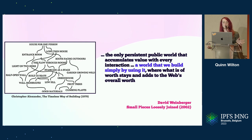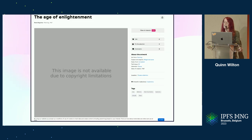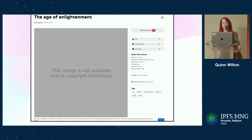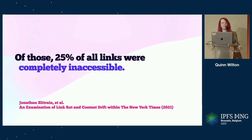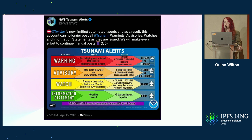In 2002, David Weinberger wrote that the internet forms the only persistent world that accumulates value with every interaction — a world that we build simply by using it, where what is of worth stays and adds to the web's overall worth. I think that may have been true once, and I sometimes see traces of that early idealism showing through the cracks of what we have today. But when I look around now, I see a web that's largely one of decay, disempowerment, and fragility — where something as profoundly simple as a hyperlink can't be relied upon to work for longer than a few weeks, where whether we're allowed the dignity of 80 characters or 4,000 is at the discretion of a billionaire we never meet, and where our access to critical information is gatekept behind APIs that can be pulled out from under us without warning.